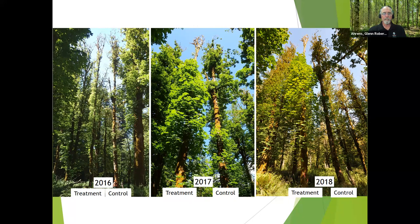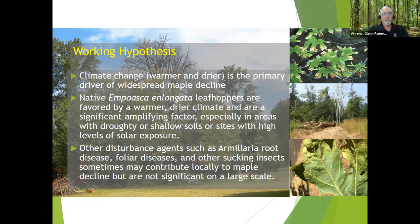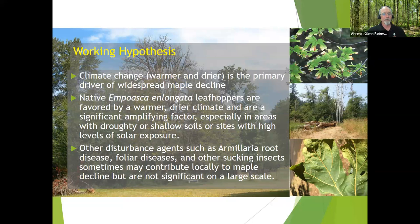It's a native insect in this case. The current working hypothesis about maple decline is that climate change and warmer, drier episodes are the main driver, and this native leafhopper — which is favored by those conditions — amplifies the factor, especially in areas that are more droughty or with higher solar exposure. Pathologists and entomologists do find a whole host of other things on every tree species, but none of them are rising up as any significant single agent causing this level of dieback. They're certainly contributing factors we won't forget when diagnosing specific areas.